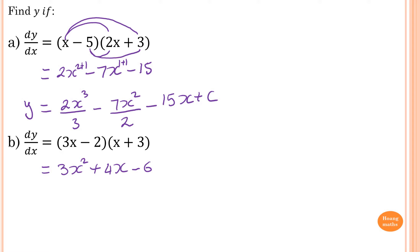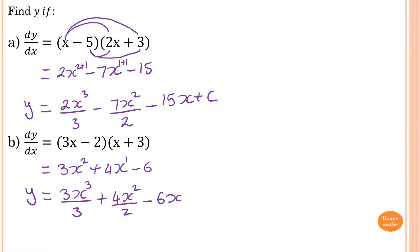Now I just integrate this — find the primitive functions, remember. So y is equal to: 3x squared, add 1 is 3, divided by 3. Plus — this is 1 here, you add 1 to this, so that means x squared, and then divide by 2, minus 6, so it becomes minus 6x, you integrate that. And then add a constant. So now I need to simplify: this cancels out, leaving me with x to the power of 3. Add 4 divided by 2 is 2, so 2x squared minus 6x, and add a constant.